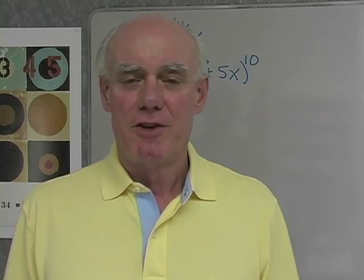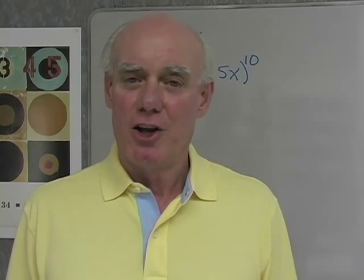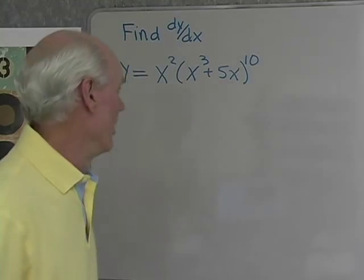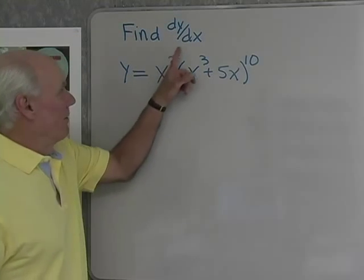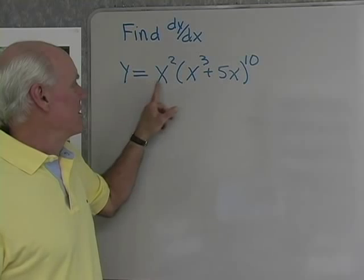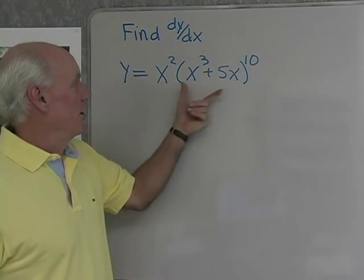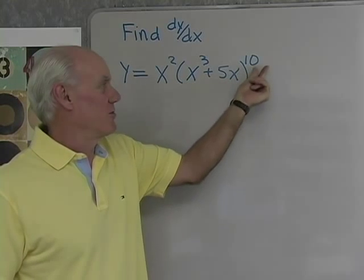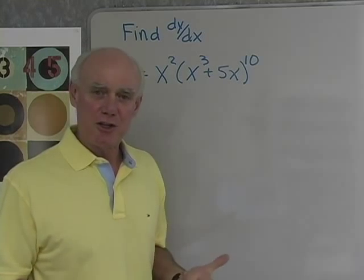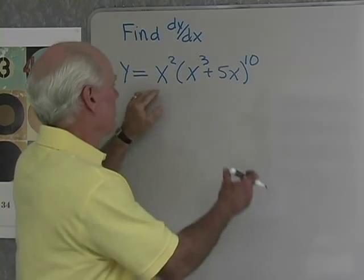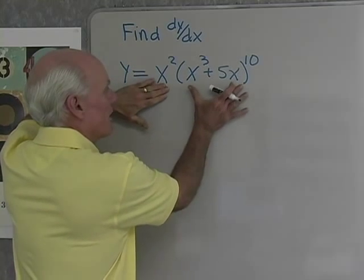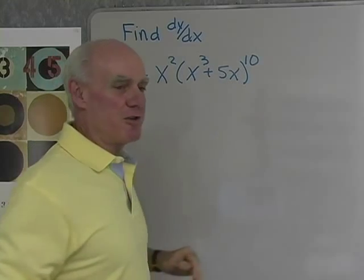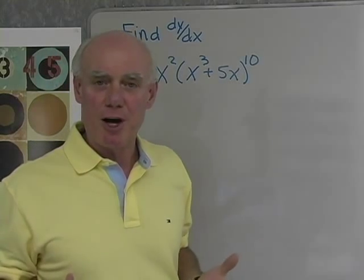Let's try some problems that involve the chain rule along with the product rule and quotient rule. We want to find dy/dx if y is equal to x squared times the quantity x cubed plus 5x raised to the tenth power. This looks like the product of two functions, so I'm going to differentiate using the product rule.